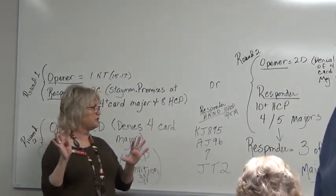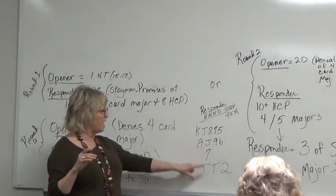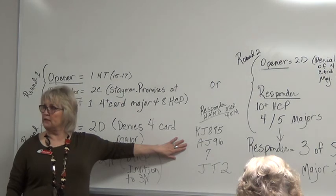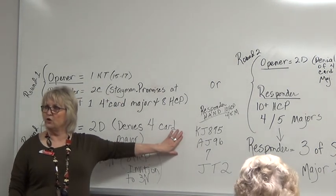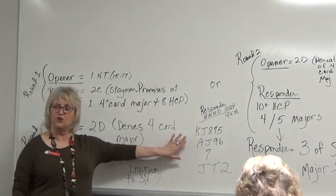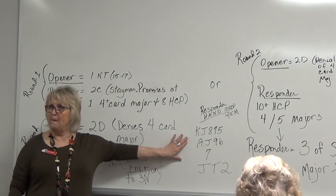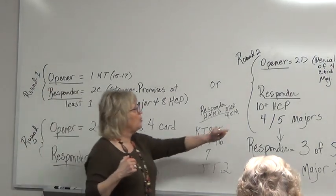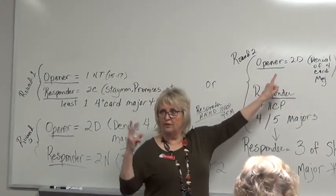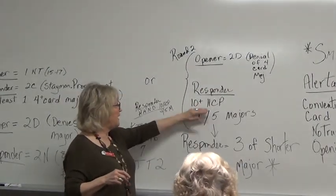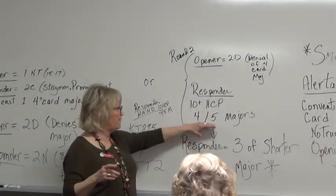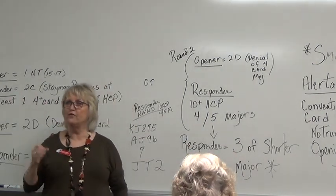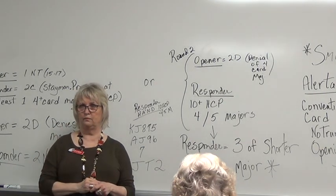Unless they have four and five of the majors. If you have four of one major and five of the other, there's a special treatment. And it's very slick. This is an example of that. Here's the responder hand. He's got ten high card points. He doesn't like no trump. He doesn't like that singleton. He's much rather playing a suit, wouldn't he? But he gets the famous two diamonds from his opener partner. So what can he do? When he gets the denial by saying two diamonds and he's got ten high card points and four or five of the majors, the responder will bid three of the shorter major.